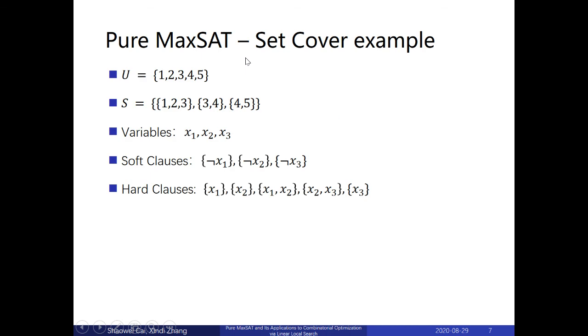This is another example which comes from set-cover. We can encode the set-cover problem into MaxSAT. Generally speaking, we are given a universal set denoted as u here. And we're also given a set of some subsets of this u. Then the set-cover problem is to require as few as possible subsets from this S to cover all elements in the universal set. We can also model this problem into MaxSAT, and it happens to be Pure MaxSAT as well.